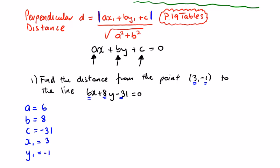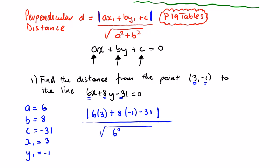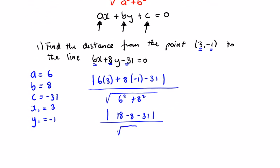You can see these absolute value bars — we can get a minus in here. So we're looking at the absolute value of 6 times 3, plus 8 times −1, minus 31, all over the square root of 6 squared plus 8 squared. On top we get 18 minus 8 minus 31, over the square root of 36 plus 64, which is the square root of 100. So we get minus 21 over 10.